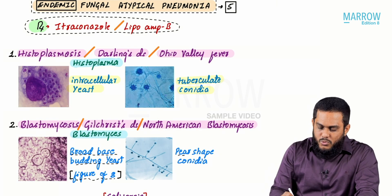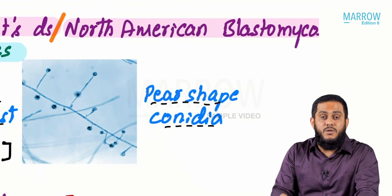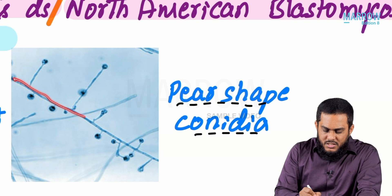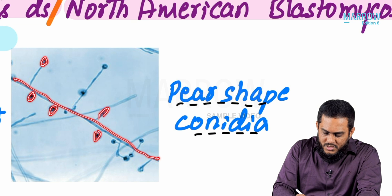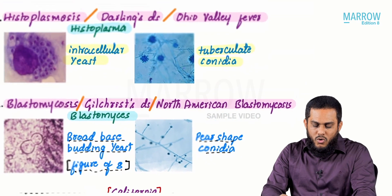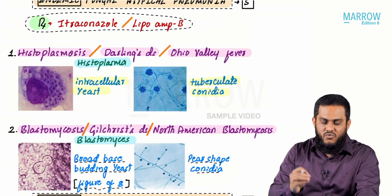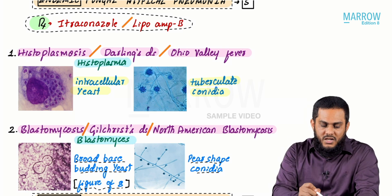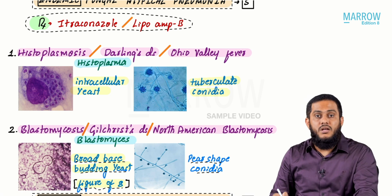The mold form of Blastomyces shows pear-shaped conidia present along the hyphae. If you see pear-shaped conidia along the hyphae, that is the mold form of Blastomyces. Summary: Histoplasma — yeast form: intracellular yeast; mold form: tuberculate conidia. Blastomyces — yeast form: broad-base budding / figure of eight; mold form: pear-shaped conidia.